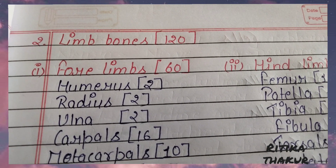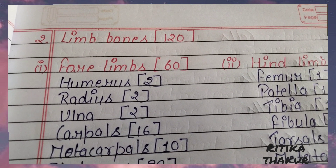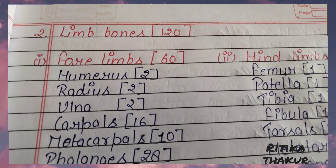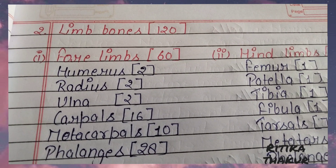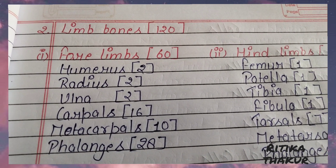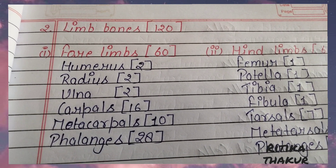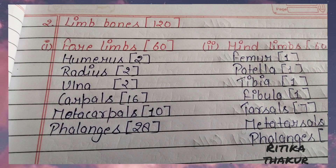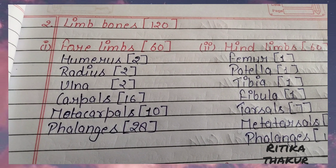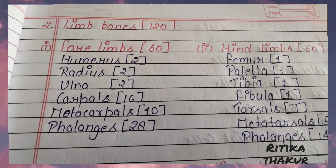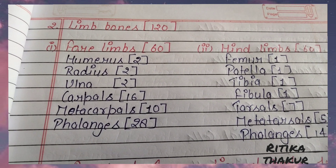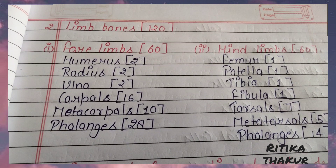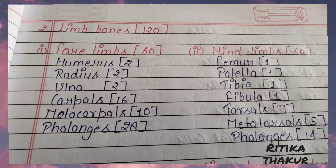Limb bones 124. Upper limb 60: Humerus 2, Radius 2, Ulna 2, Carpal 16, Metacarpal 10, Phalanges 28. Lower limb 64: Femur 2, Patella 2, Tibia 2, Fibula 2, Tarsal 14, Metatarsal 10, Phalanges 28.